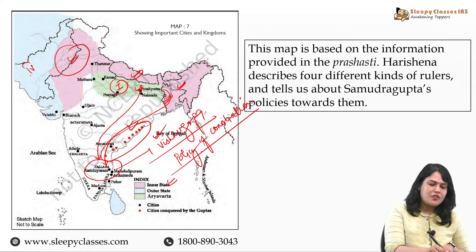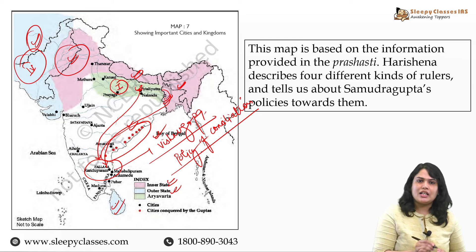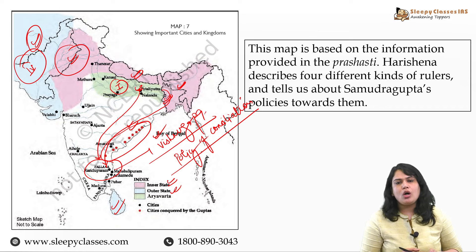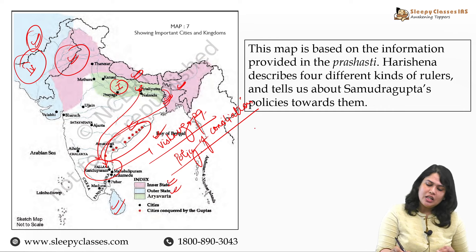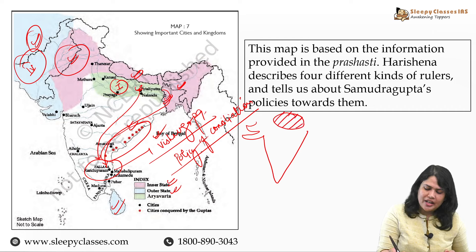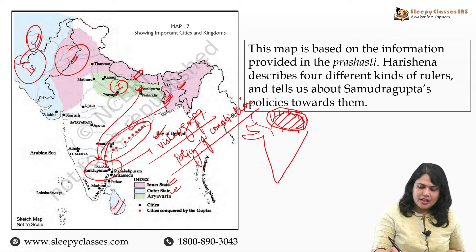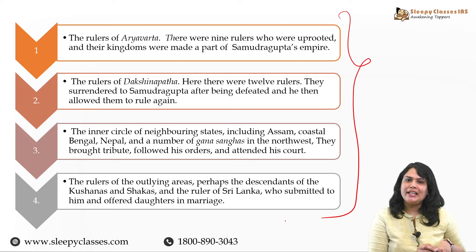Yahan pe hum dekhenge ki jo fourth category of states hai, woh hai the outer states in the northwest and Sri Lanka. Yahan ke rulers ne bhi Samudragupta ke saamne submitted kar diya - yahan pe inhon ne apni betiyan unki Samudragupta se shaadi karvai, aur inhon ne in general Samudragupta ka jo power hai, use accept kiya. So Samudragupta ka jo influence hai, woh kaafi dur tak fayla hua tha. Aur aap yahan pe dekh sakte hain ki jo Gupta territories, Chandragupta First ke time pe kewal itne area tak confined thi, ab direct control to extend hua hi hua hai gangetic plains ke in areas mein, indirect control jo hai usko bhi agar ham count karein, to aap dekh sakte hain ki jo Gupta territories hain, woh is entire area tak spread ho chuki thi.